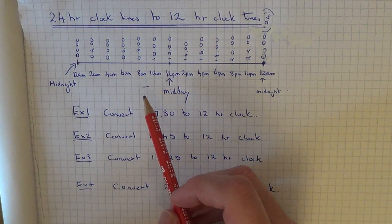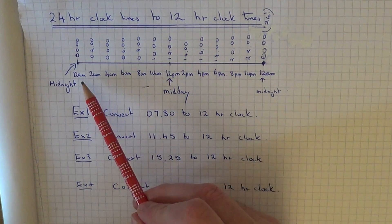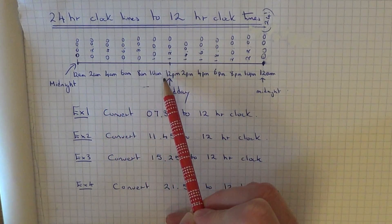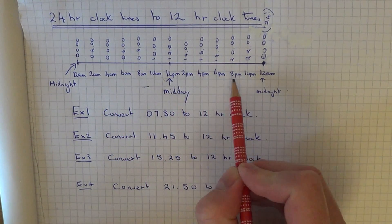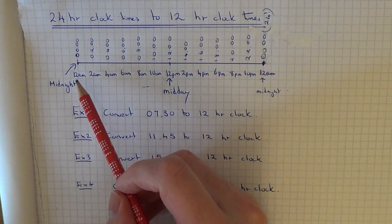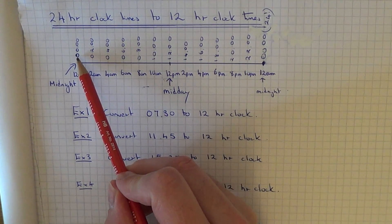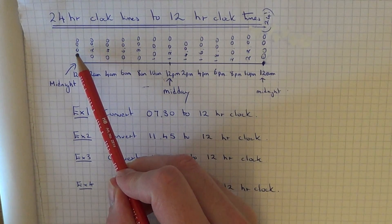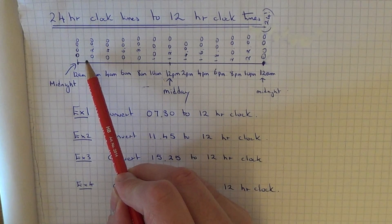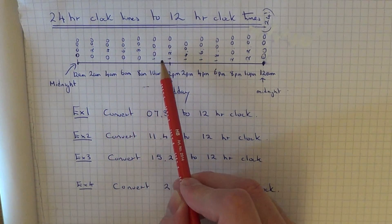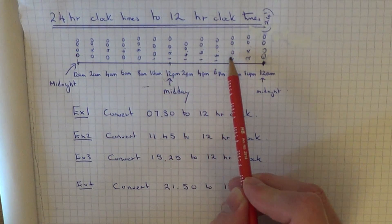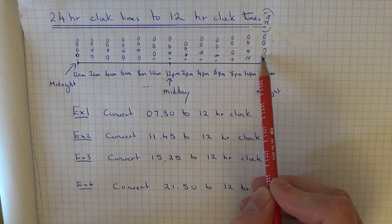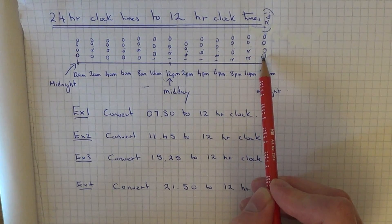Instead of what we have with the 12-hour clock where we have 12 hours for the morning and 12 hours for the afternoon, the 24-hour clock runs from midnight which is 0000 and it goes up from there all the way up to the number 24 again, which is 0000 for midnight.